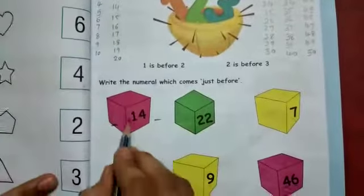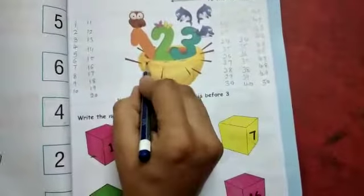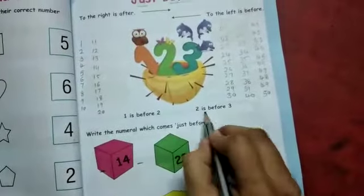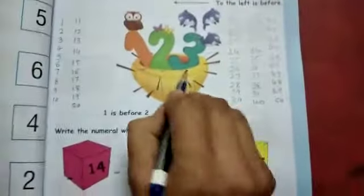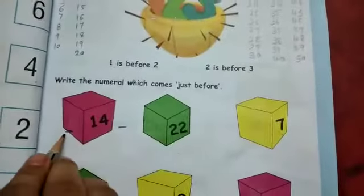To write the numeral which comes just before. Aapko yaha pe before number likha hai. 1 is before 2. 2 ke before kaunsa number hai? 1. And 2 is before 3. 3 hai, uske before kaunsa number hai? 2 hai. To the left is before.